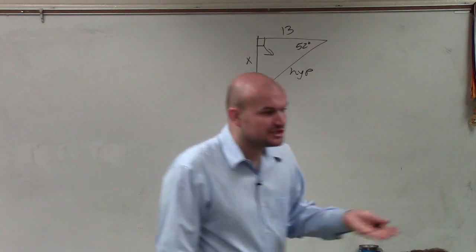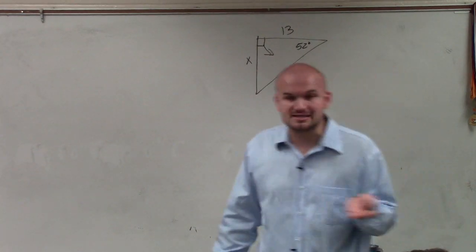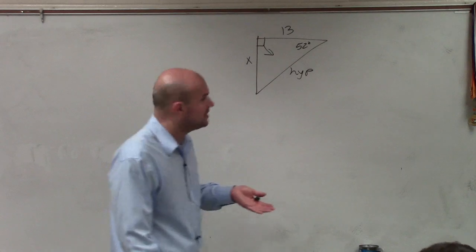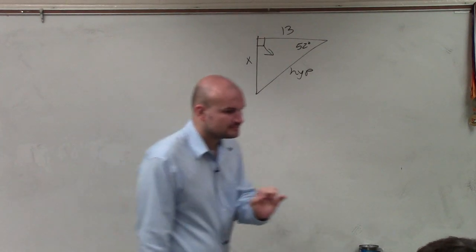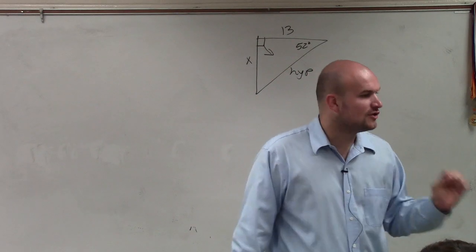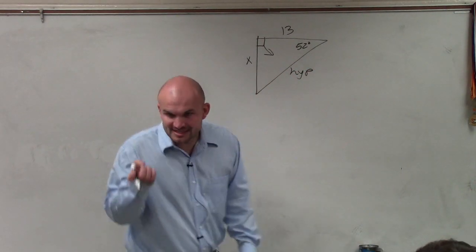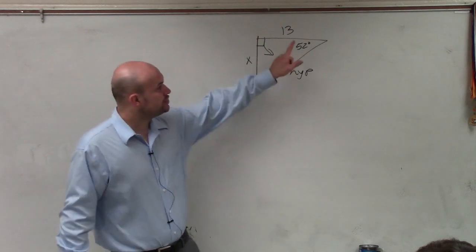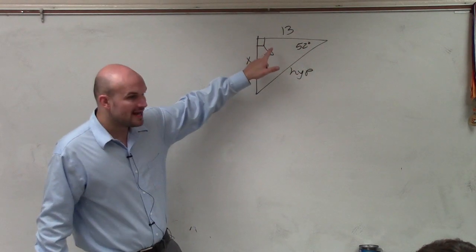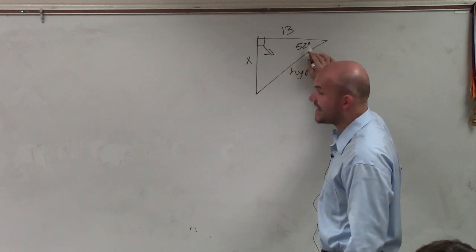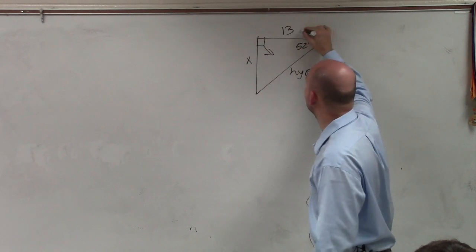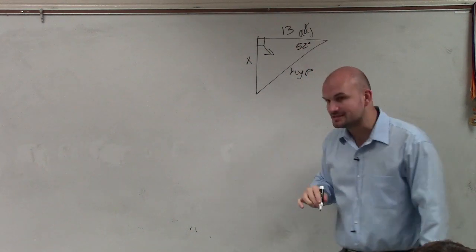Now, the next definition we talked about is the adjacent side compared to the opposite side. So Camilla, do you remember how to find the adjacent side? Nope. OK, so let me re-say it. The adjacent side connects your angle and the right angle. So therefore, you can see that the side between the angle that is provided and the right angle is your adjacent side.